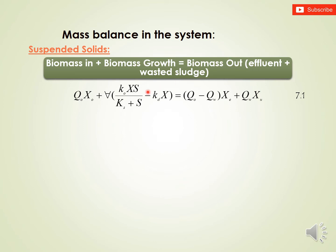This can be represented in the following equation. Biomass in is Q₀ times X, where Q is in cubic meters per day and X is in kilograms per cubic meter. This gives us the rate of biomass entering plus the biomass growth, which equals biomass out. Biomass out is the effluent term (Q₀ minus Q_wasted) times X_E, plus Q_W times X_U, which is the wasted sludge.